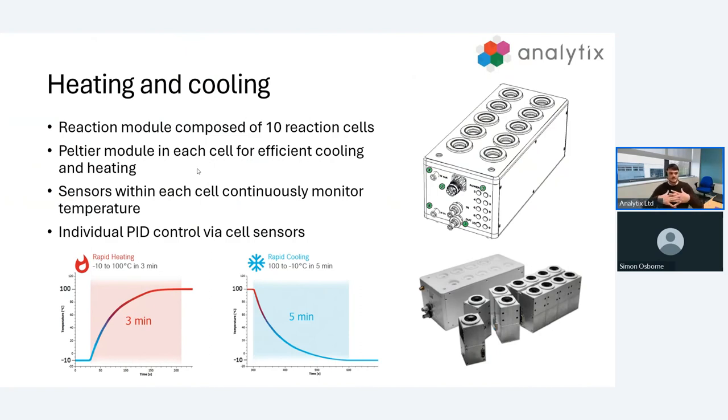Each of these reaction cells is made up of a Peltier module, which you can see in the bottom right of your screen. This Peltier module is capable of carrying out really efficient heating and cooling. Depending on the direction in which an electrical current travels through this module, we're able to heat or cool. We have sensors in each of the individual modules continuously monitoring the temperature of the heating jacket. The system is completely PID controlled, which enables us to get really excellent temperature stability.